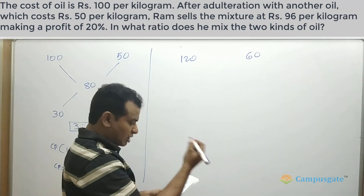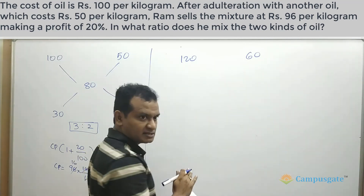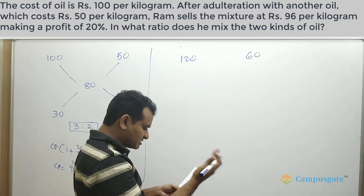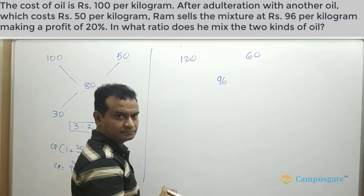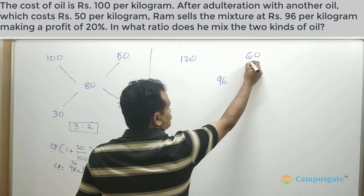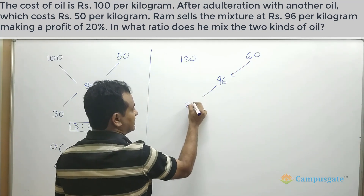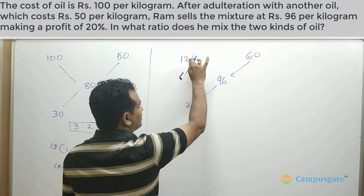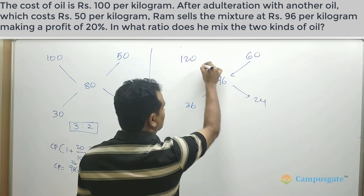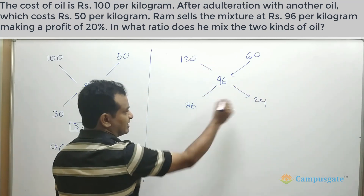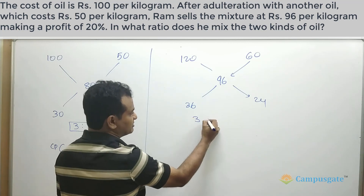Now these two values — 120 and 60 — are selling prices. The selling price of the entire mixture is 96. Applying the allegation rule: 96 minus 60 gives 36, and 120 minus 96 gives 24. Taking the ratio: 12 goes three times into 36 and 12 goes two times into 24, giving the ratio 3 to 2.